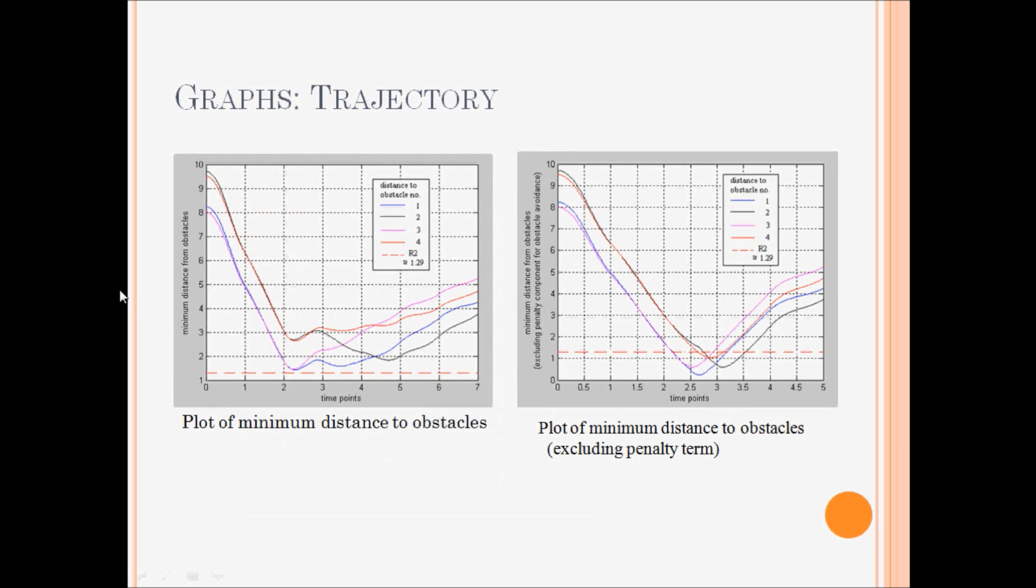Let's look at the minimum distance to obstacles. And here, the threshold is given by this red line. And we can see how near this red line the distance to the obstacles goes. And there is no crossing here. So we have successfully negotiated all the obstacles here. While in this plot, we have removed the penalty term from the cost function. And we see that the distance to the obstacles has gone beyond the threshold, which means collision.